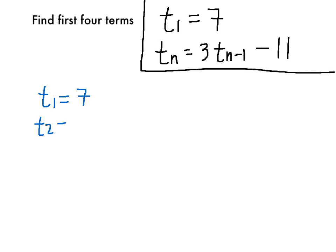For t₂, the definition tells us we need to do 3 times tₙ₋₁, or the previous term. Here's where that 7 comes in, and then subtract 11. In this case it's 21 minus 11, so your t₂ or your second term is 10.